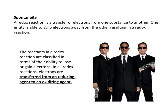A redox reaction is a transfer of electrons from one substance to another. One entity is able to strip electrons away from another, resulting in a redox reaction. The reactants in a redox reaction are classified in terms of their ability to lose or gain electrons. In all redox reactions, electrons are transferred from a reducing agent to an oxidizing agent. So just like there's oxidation and reduction, there are reducing agents and oxidizing agents.